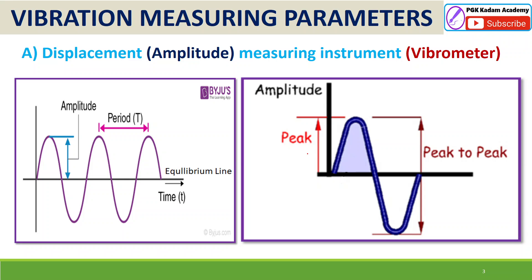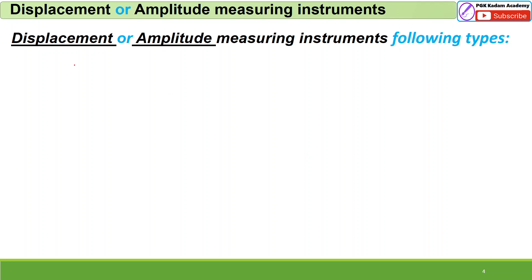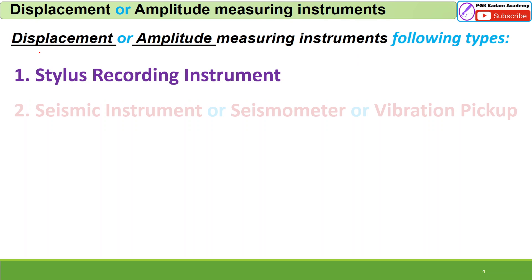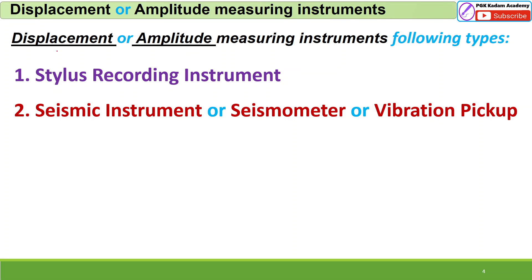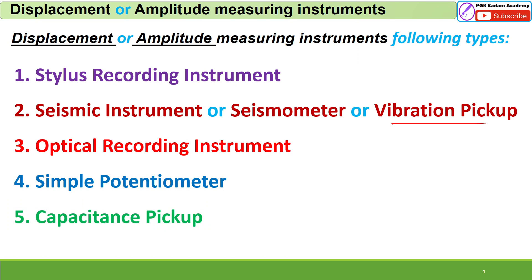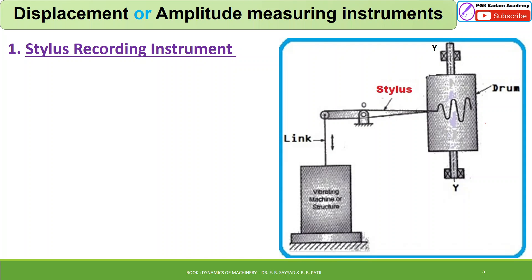Using different measuring instruments — called vibrometers, or displacement amplitude measuring instruments — there are five types: first is the stylus recording instrument; second is the seismic instrument, also called seismometer or vibration pickup; third is the optical recording instrument; fourth is the simple potentiometer; and fifth is the capacitance pickup. We will learn each of these in detail.